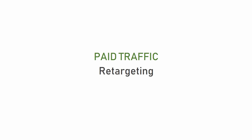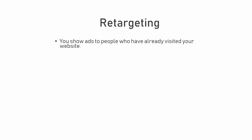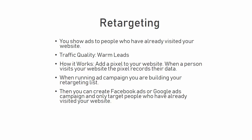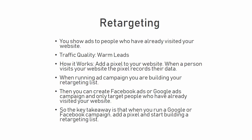Another version of paid traffic is called retargeting, and this involves showing ads to people who have already visited your website. These are warmer leads because they have already clicked your ad and seen your website. The way this works is that you add a pixel to your website — let's say a Google pixel or a Facebook pixel. Then whenever a person visits your website, the pixel records their data. When you have enough visitors, you have a retargeting list. Then you can create Facebook ads or Google ads and only target people who have already visited your website. Because they are warmer leads and know of your existence, they are a little bit easier to sell. So the key takeaway is that when you run a Google or Facebook campaign, add a pixel and start building your retargeting list.